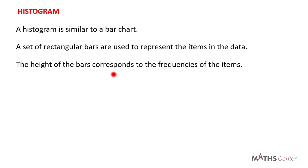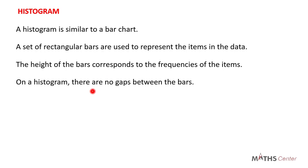But there are some differences as well. One of them is that on a histogram, there are no gaps between the bars. When drawing a bar chart, we saw that from one bar to another we leave some space between them. On a histogram, there are no gaps or spaces between the bars.